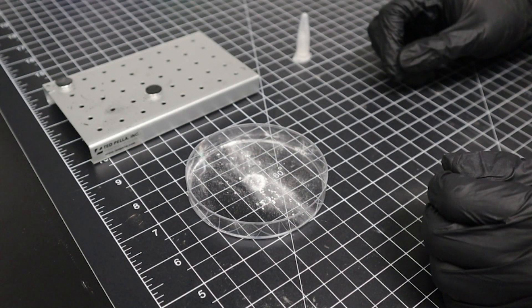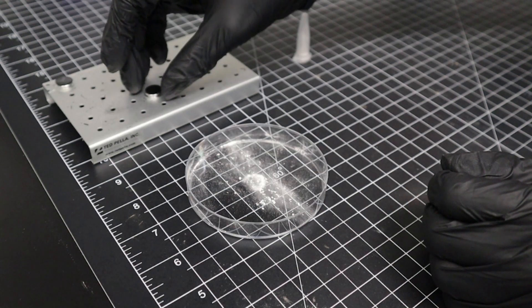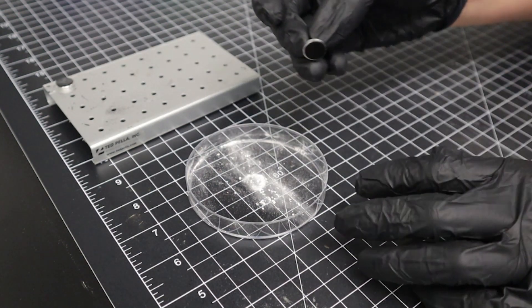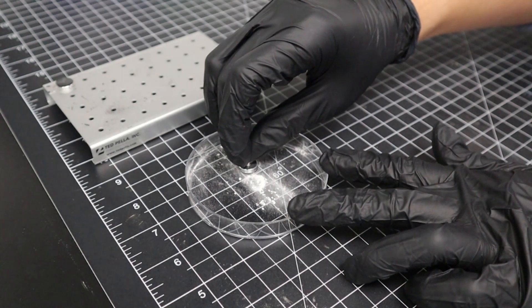We can then grab our aluminum stub with carbon tape and then lightly apply it to the dispersed powder. This ensures a nice even distribution of particles across the surface of the stub.